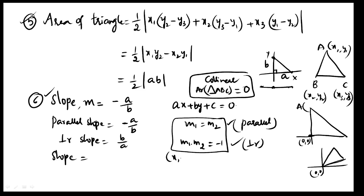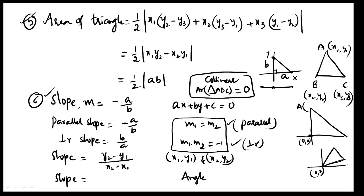Given two points x1, y1 and x2, y2, the slope of the line can be found by the formula: y2 minus y1 divided by x2 minus x1. Also, slope can be found using the angle: slope equals tan theta. From a line equation, slope is minus a by b.